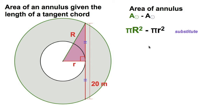And the fact is, it doesn't matter. It's really neat. I'm going to put in a new variable here — I'm just going to call this b. That's going to be half of the tangent chord, so that's just from here to here. And you see where we're going here: we have ourselves a right triangle. See it? Beautiful.